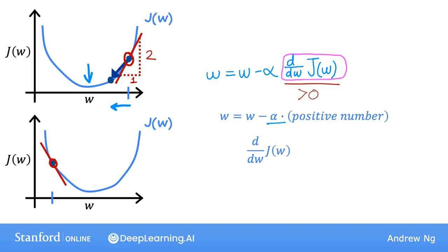And so this line, sloping down and to the right, has a negative slope. In other words, the derivative J at this point is a negative number. For instance, if you draw a triangle, then the height like this is negative 2 and the width is 1.